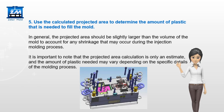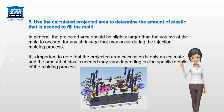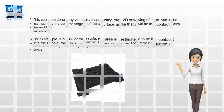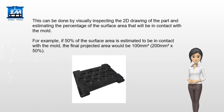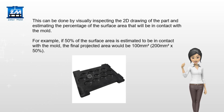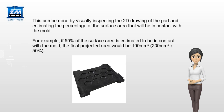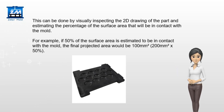It is important to note that the projected area calculation is only an estimate, and the amount of plastic needed may vary depending on the specific details of the molding process. This can be done by visually inspecting the 2D drawing of the part and estimating the percentage of the surface area that will be in contact with the mold. For example, if 50% of the surface area is estimated to be in contact with the mold, the final projected area would be 200 mm x 50% = 100 mm.